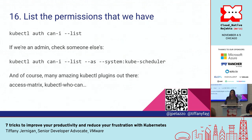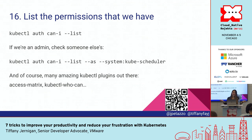There's kubectl auth can-i with --list. If you decide to give someone RBAC permissions, it's kind of important to make sure you actually gave them the right permissions. You don't want to accidentally have given them full access to your entire cluster. If you're admin, you can also check someone else's permissions as well. There are several other plugin tools out there that you can add for also dealing with checking these types of things.